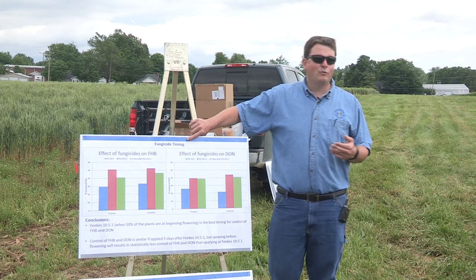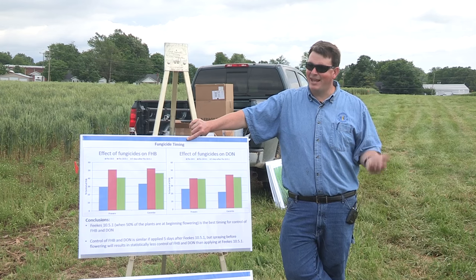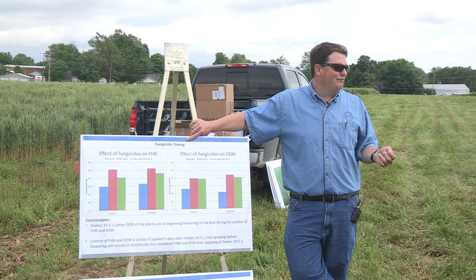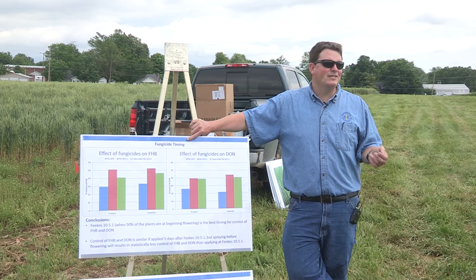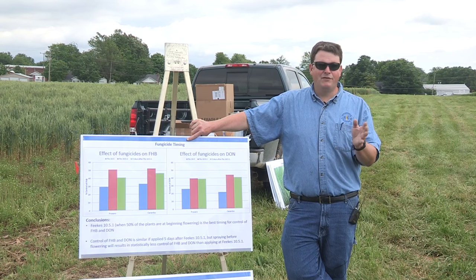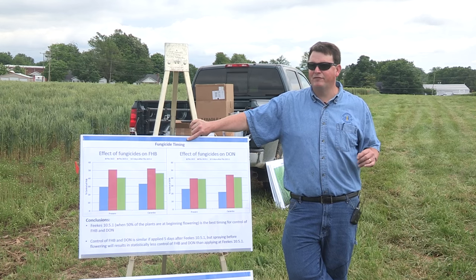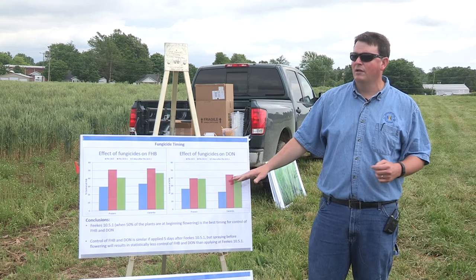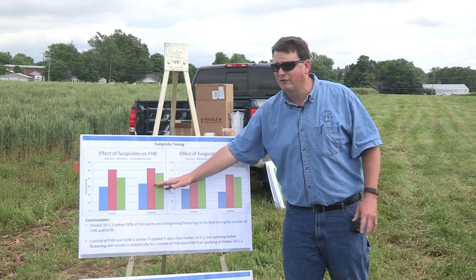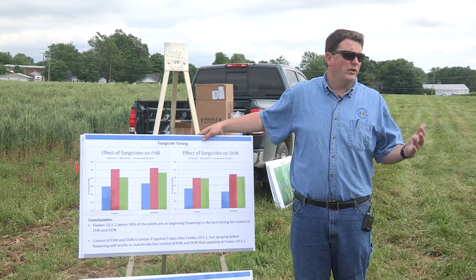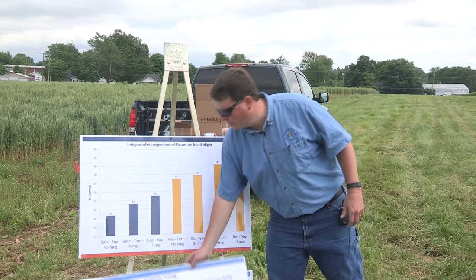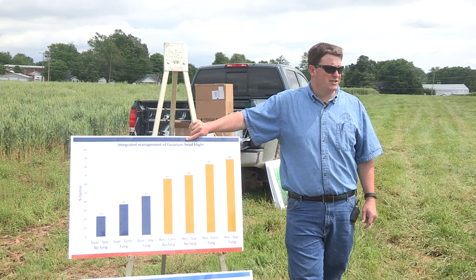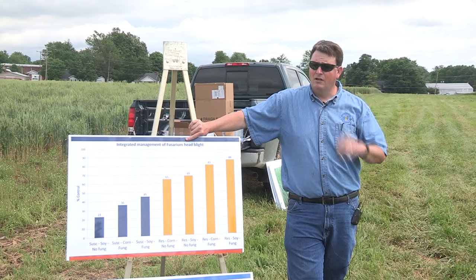When we have conditions favorable for scab, we may not have conditions favorable for applying fungicides — muddy fields, it may be raining, so we can't always hit that perfect timing. But if you're still within a few days — within about five days — following that perfect timing, I think it's still critical to go ahead and spray that field, because you're still going to get a pretty good level of control of vomitoxin. You will drop off a little on scab, but this is really all about quality — especially vomitoxin — because that's where your dockage at the elevator is going to come from.